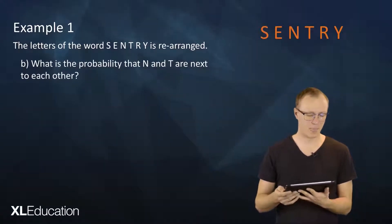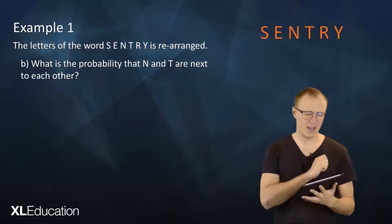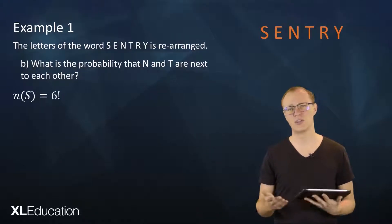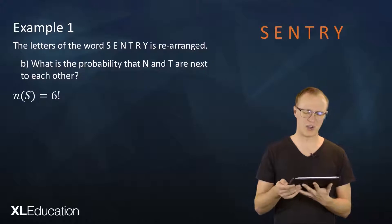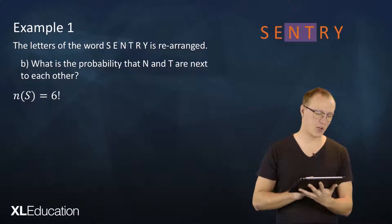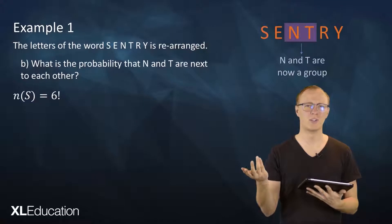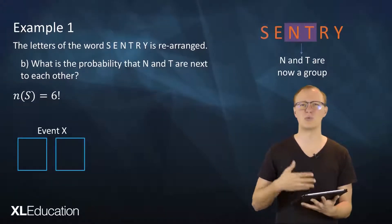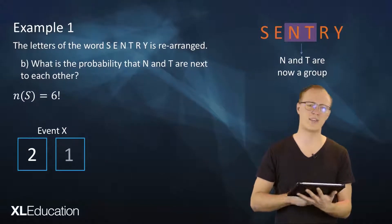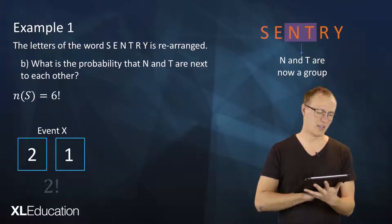For the second question: what is the probability that N and T are next to each other? The sample space is again 6!. N and T must be next to each other, so they form a group. First we ask: how many ways can N and T be arranged within that group? There are two positions and two things to choose from — in the first position we can choose either N or T, and in the second position one thing remains. So event X, the number of ways to arrange N and T within the group, is 2 factorial.